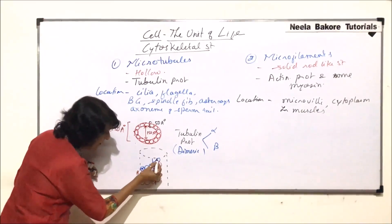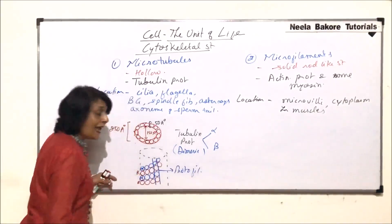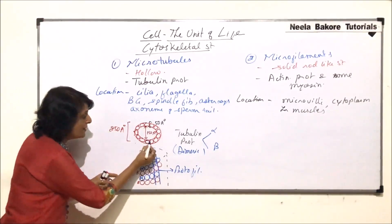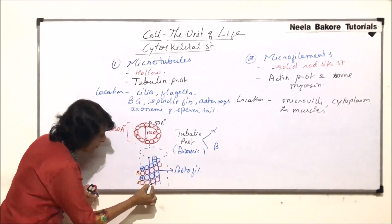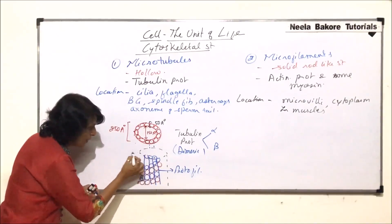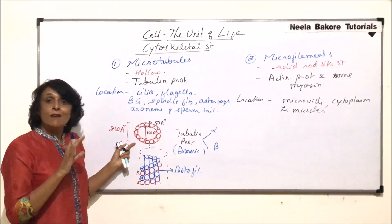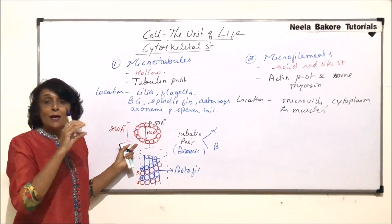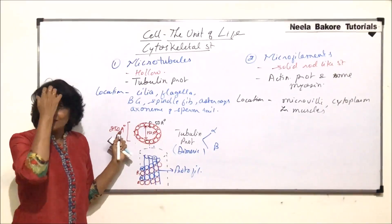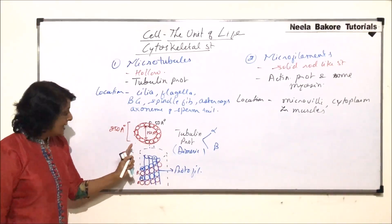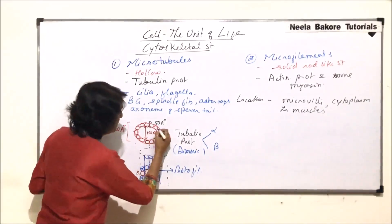A line of these dimers forms a thread known as a protofilament. From the top, each protofilament is made up of alternating alpha and beta tubulin. There are 13 such protofilaments in total. When we discussed cilia and flagella, we noted that microtubule subunits form A, B, and C configurations called doublets or triplets — where A has 13 and B has 10 protofilaments.